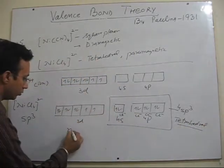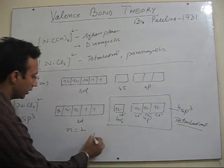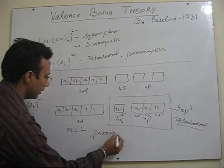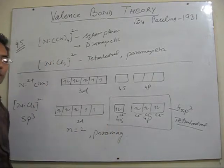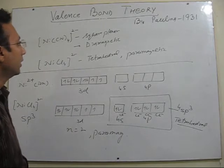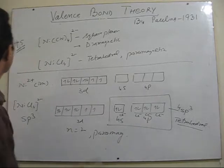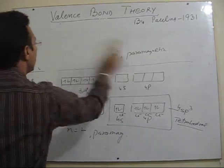And if you see there are two unpaired electrons, so it is paramagnetic also. So this explains your question. So let's take another problem from NCERT.